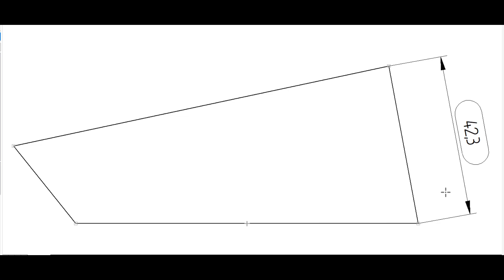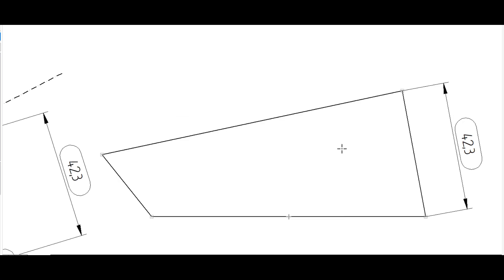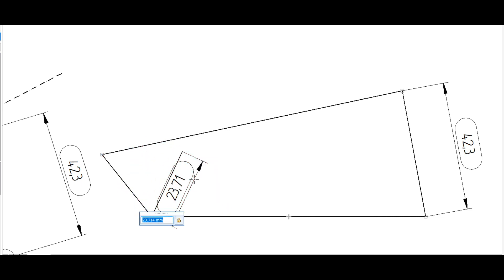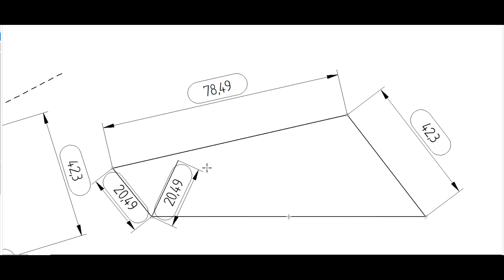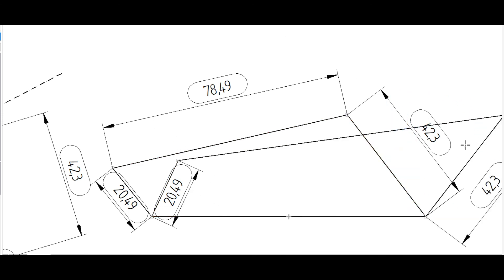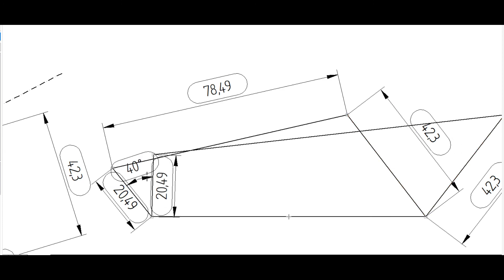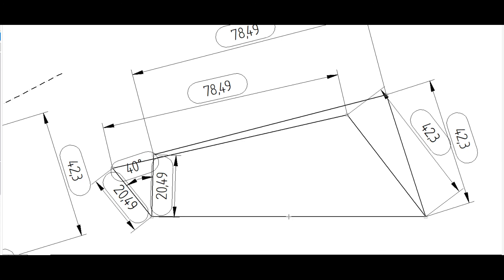This is the input angle, this is the first version. The input length is 20.49. The input length is 78.49, the output is 42.3, and the input angle is 40 degrees. Theta is 42. This is the first to second position — this is the input angle, this is the output length, and this is 20.